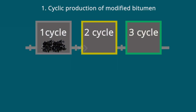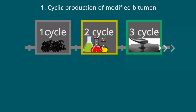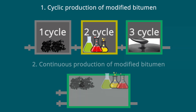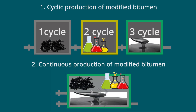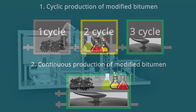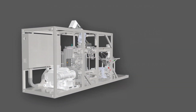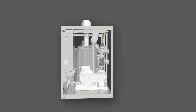For bitumen modification, GlobeCore produces batch and continuous type plants. In batch plants, modified bitumen is produced in cycles of several sequential operations. In continuous plants, these operations are simultaneous, which makes it possible to produce modified bitumen continuously.